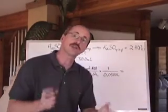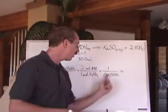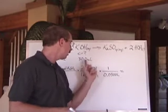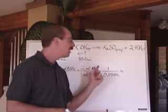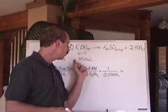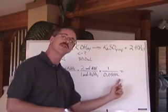Don't want moles. We want concentration. Concentration is moles divided by volume of KOH. The volume is 30 ml. Turn it 1, 2, 3 into 0.0300 liters.